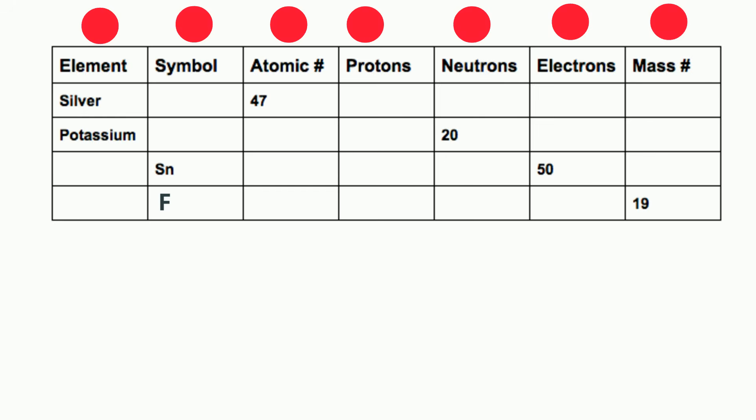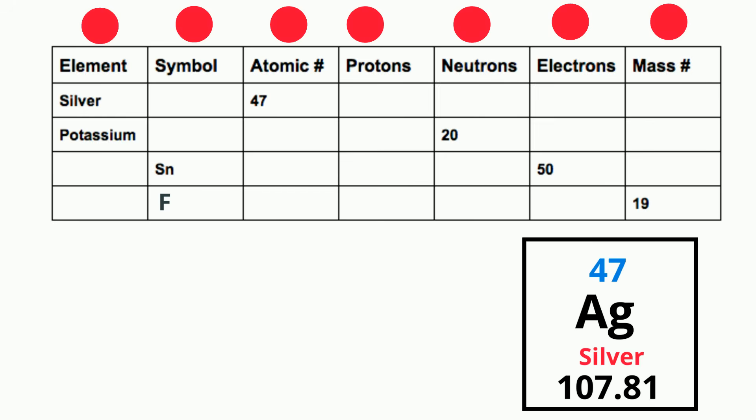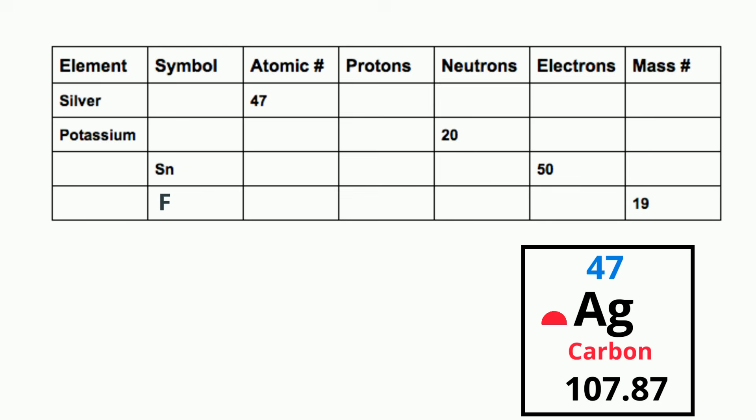So first we have silver. If you find silver, it is a symbol of Ag. It has an atomic number of 47. So that means it has 47 protons. Let's jump over to the electrons and each of these elements has a zero charge. So 47 minus 0 equals 47. So we will have 47 electrons.